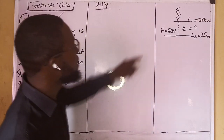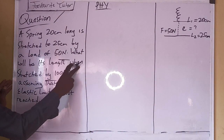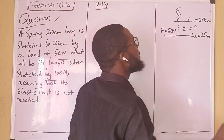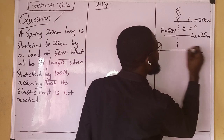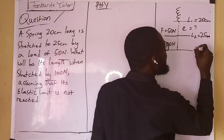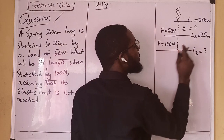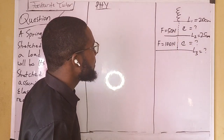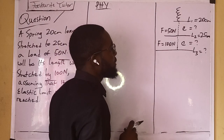Now we place a load that gave us 25 centimeters as the new length. What will be its length when stretched by 100 newtons? So if we apply 100 newtons of force, let's call the resulting length — length three. We are looking for length three, the new length when we apply 100 newtons of force.